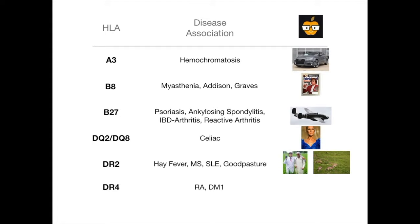HLA-DR4 is associated with rheumatoid arthritis and type 1 diabetes. The mnemonic here is that there are four walls in one room. Four for DR4, one for DM1 — type 1 diabetes — and room for rheumatoid arthritis. There are four walls in one room: four for DR4, one for type 1 diabetes, and room for rheumatoid arthritis. This one is not a visual mnemonic — it's just a quick one-liner, really quick and dirty, but it works.